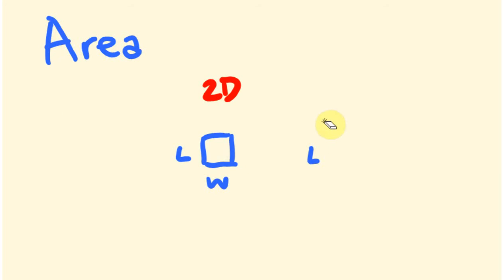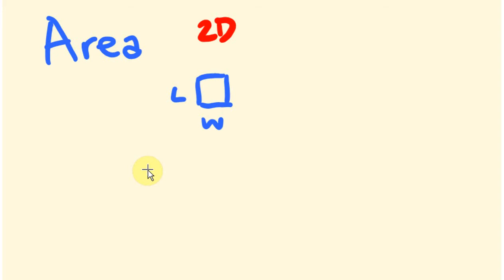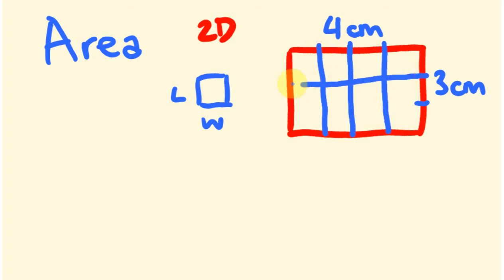We'll be looking at 2D shapes when looking at area. For the units we use: for really small areas we might use square millimeters. We measure area in squares. For example, a shape that is 4 centimeters by 3 centimeters — if we cut it up 4 times one way and 3 times the other, we end up with 12 of these squares. That's basically how we measure two dimensional shapes.